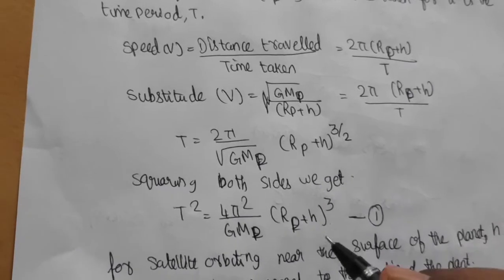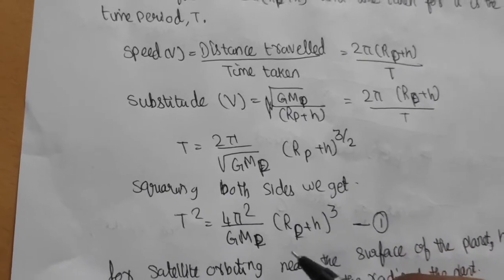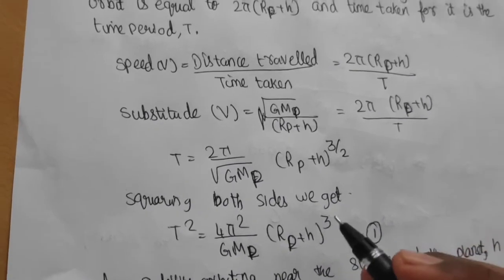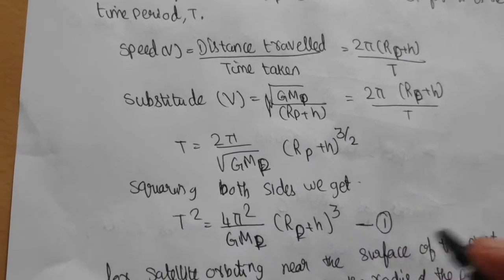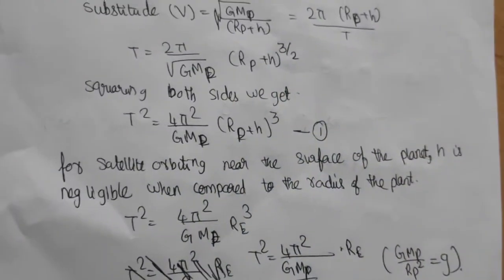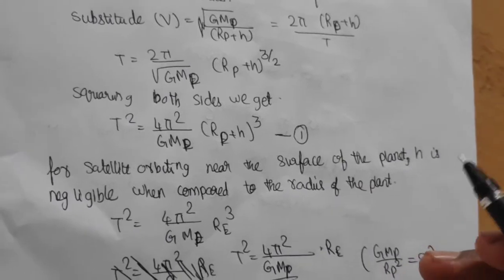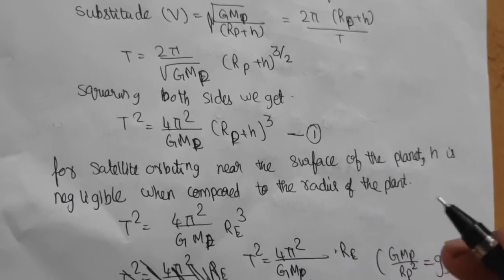we get T² = (4π²/GMp)(Rp+h)³. Take this as equation 1. For a satellite orbiting near the surface of the planet, h is negligible when compared to the radius of the planet.